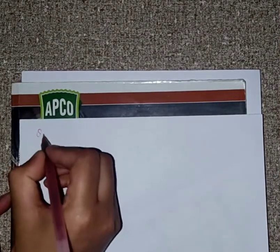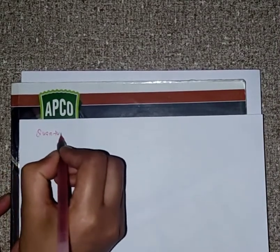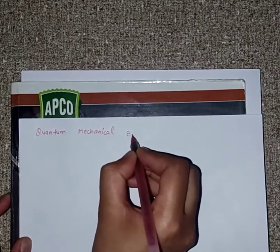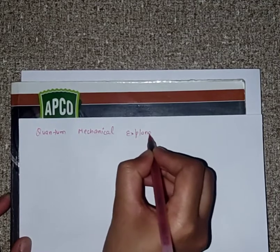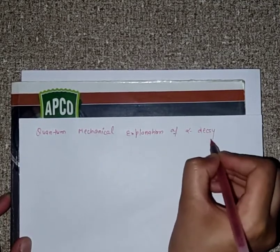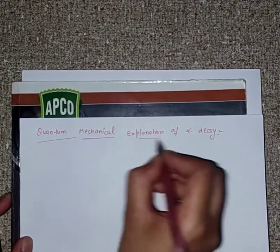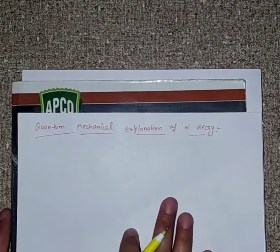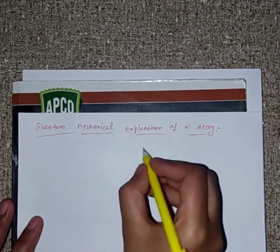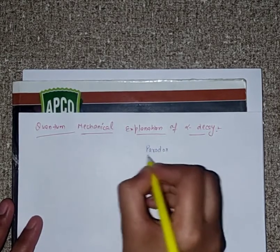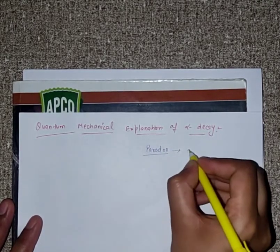So today we are going to discuss about the quantum mechanical explanation of alpha decay, which resolves the problem of the paradox. Our topic is the quantum mechanical explanation of alpha decay. Classically we have seen a paradox — what is that paradox?